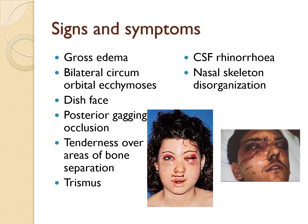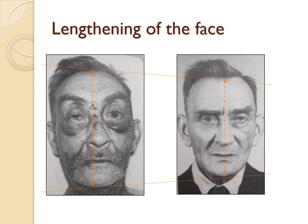The main signs and symptoms for the Le Fort fractures are gross edema, bilateral circumorbital ecchymosis, dish face, open bite, malocclusion, tenderness at the areas of bone separation, trismus, CSF rhinorrhea, nasal septal derangement — these are the main signs and symptoms of the midface fracture seen in Le Fort 1, Le Fort 2, and Le Fort 3, along with lengthening of the face.